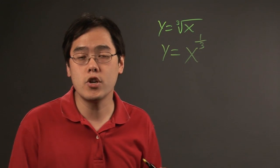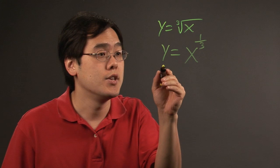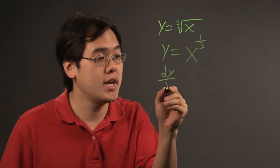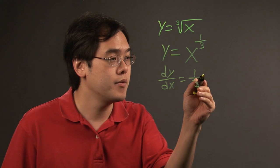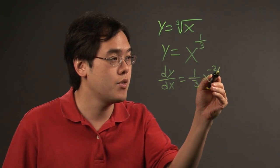To use differentials, you're basically taking the derivative and then solve for dy. Taking the derivative of both sides, you have dy dx is equal to, using the power rule here, one-third x to the negative two-thirds.